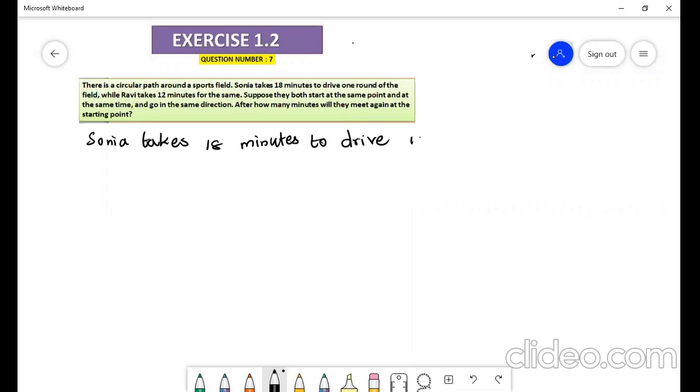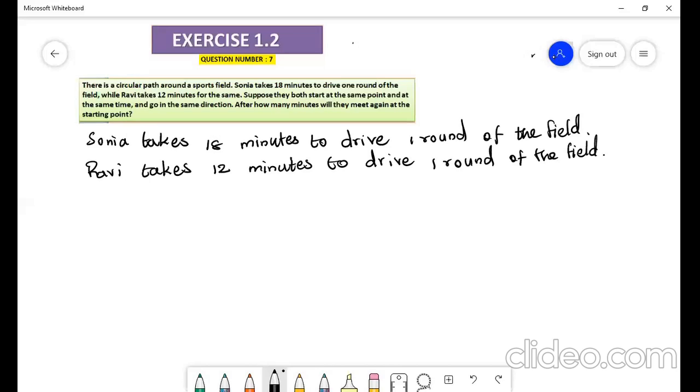Ravi takes 12 minutes to drive one round of the field. It is given that they start at the same point and end at the same time and go in the same direction. Here we need to find out after how many minutes will they meet again at the starting point.